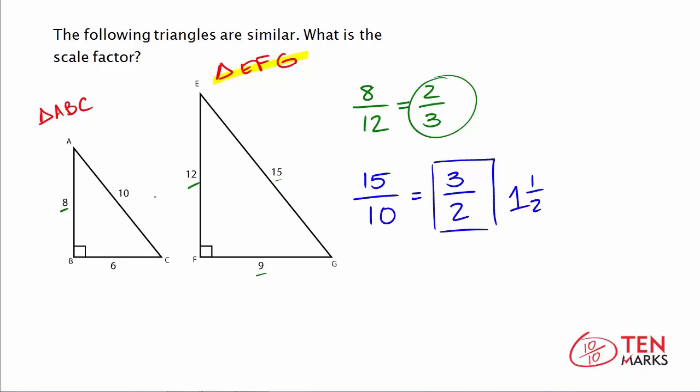The other thing to notice here is that when we found the first scale factor, we were taking the ratio of the smaller triangle to the larger triangle, and we got 2 thirds. When we took the ratio in the reverse direction, when we took the measurement of the larger triangle, triangle EFG, to the smaller triangle, triangle ABC, we got the inverse fraction. 3 halves is the inverse of 2 thirds.